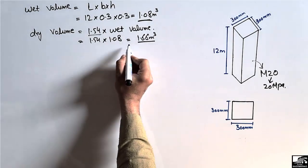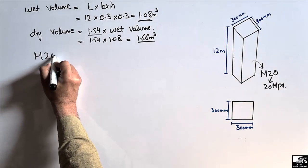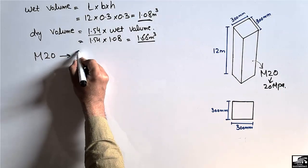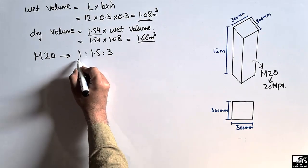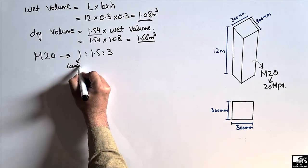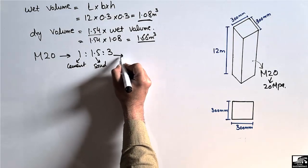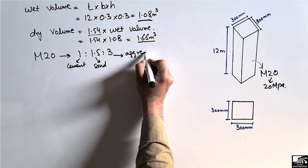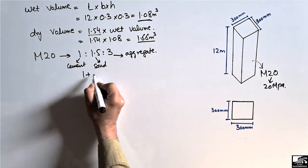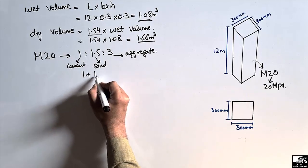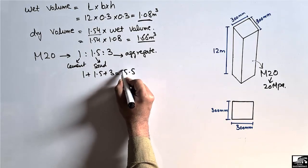The next step is to find the mix ratio. For M20 grade concrete, the mix ratio is 1:1.5:3 — where 1 represents cement, 1.5 represents sand, and 3 represents aggregate. Adding these three values gives us a total ratio sum of 5.5.